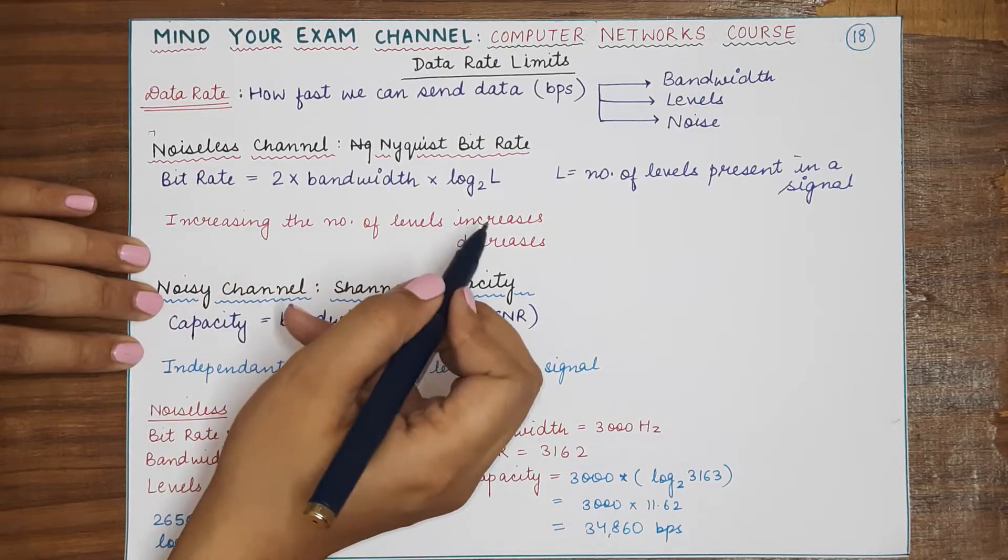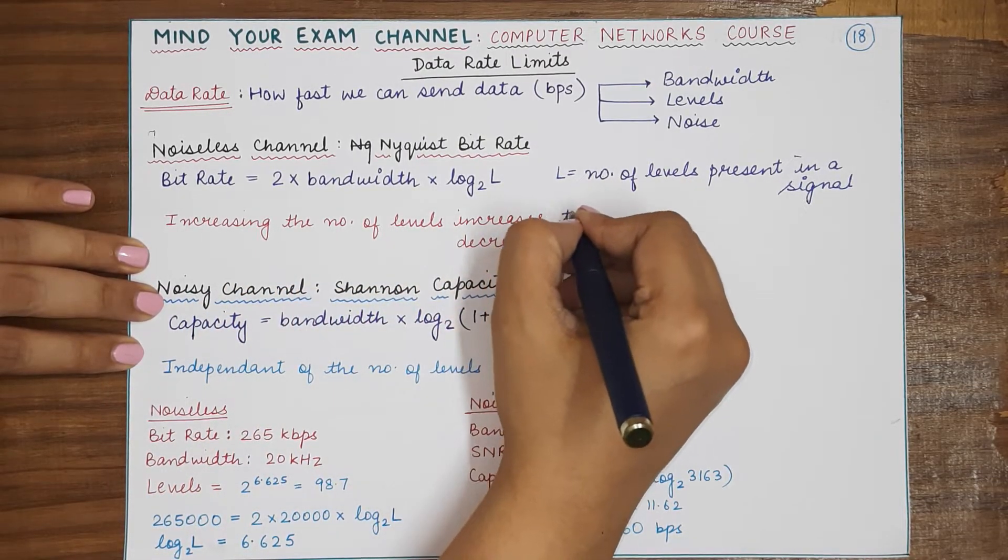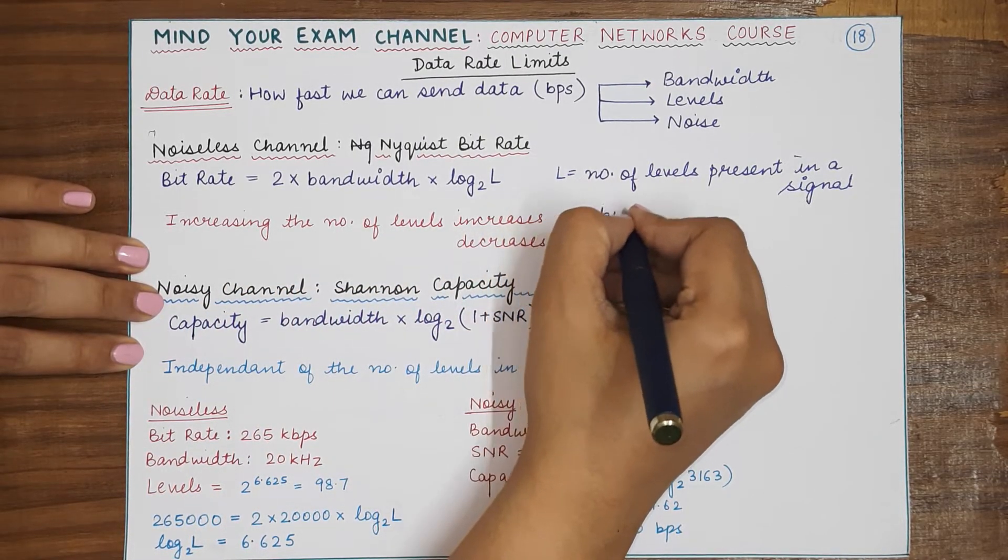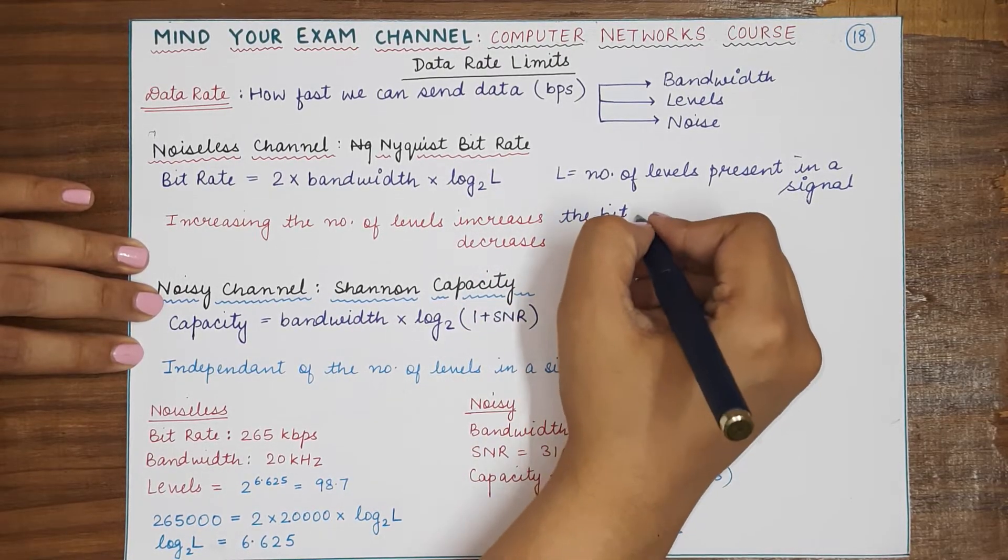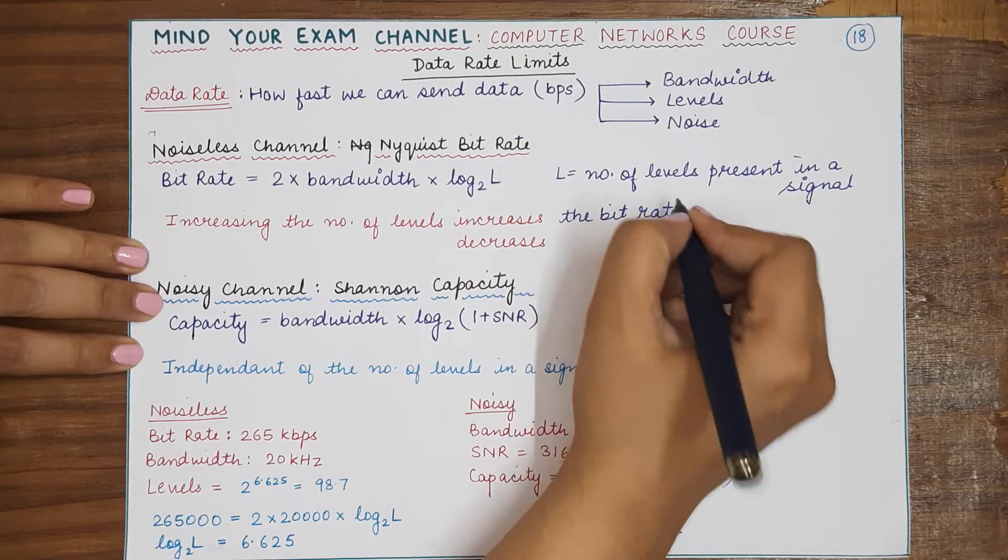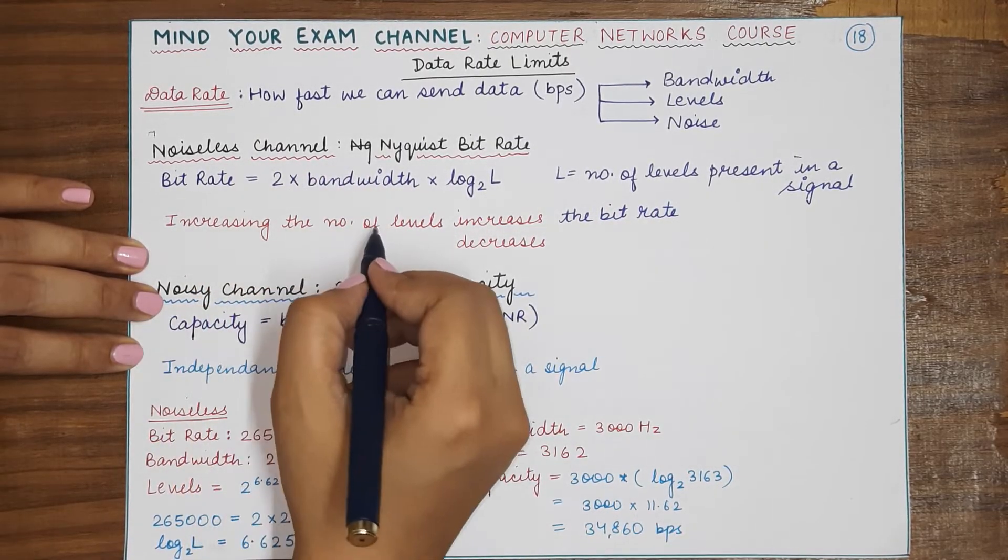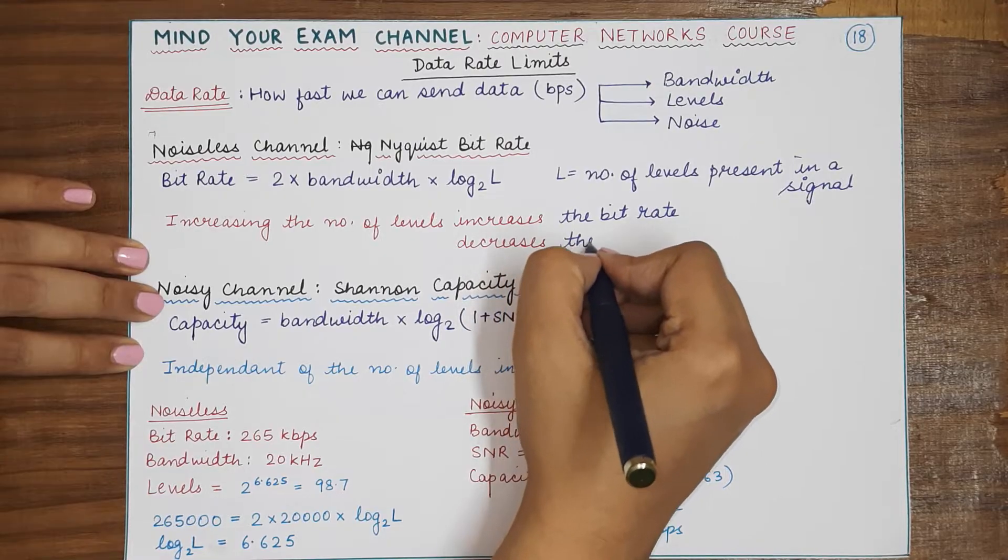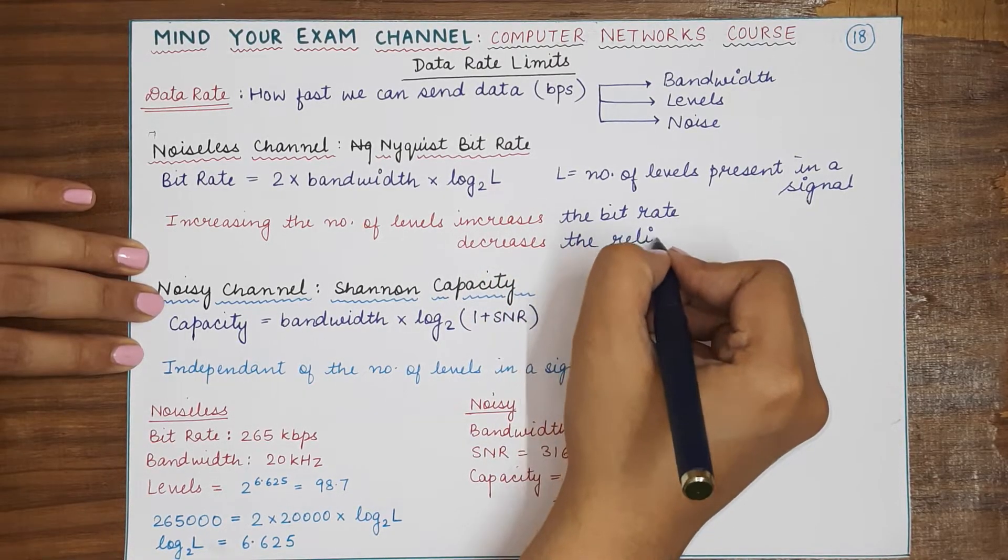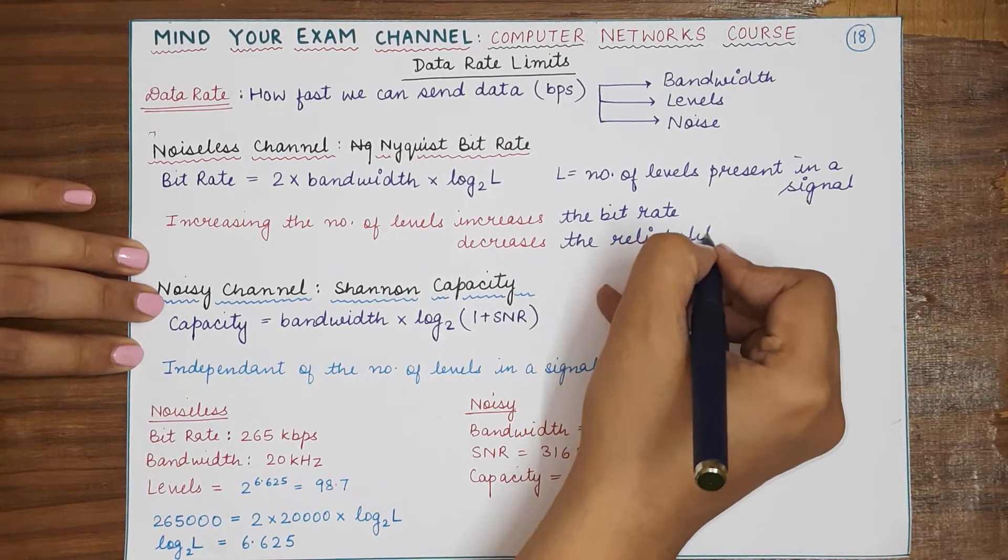However, since increasing the number of levels will make the signal more complex, therefore increasing the number of levels will also decrease the reliability of transmission.